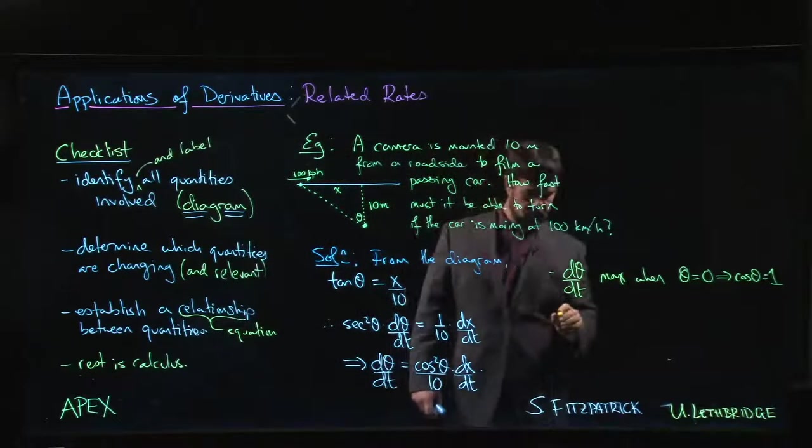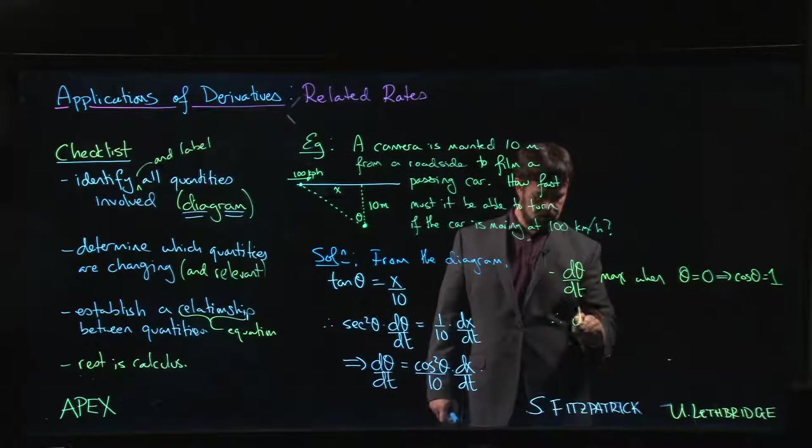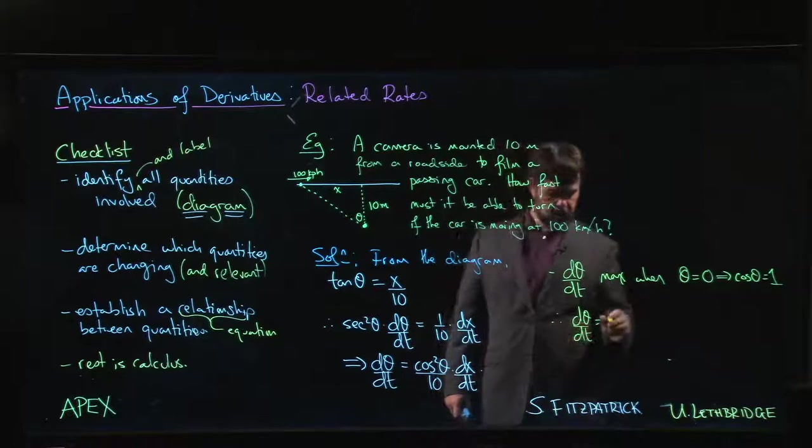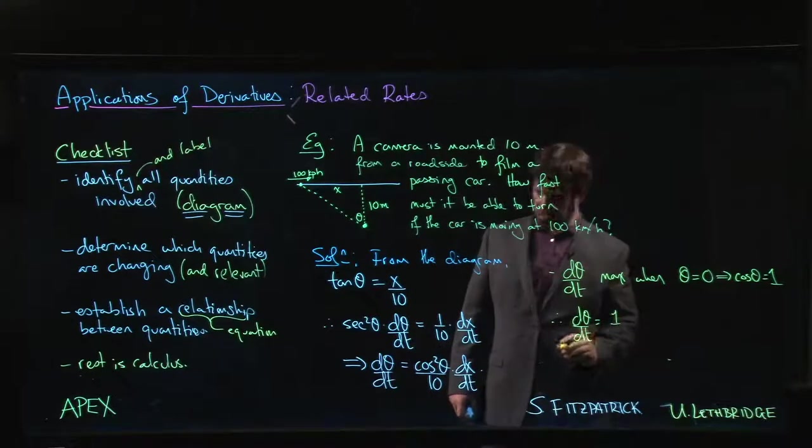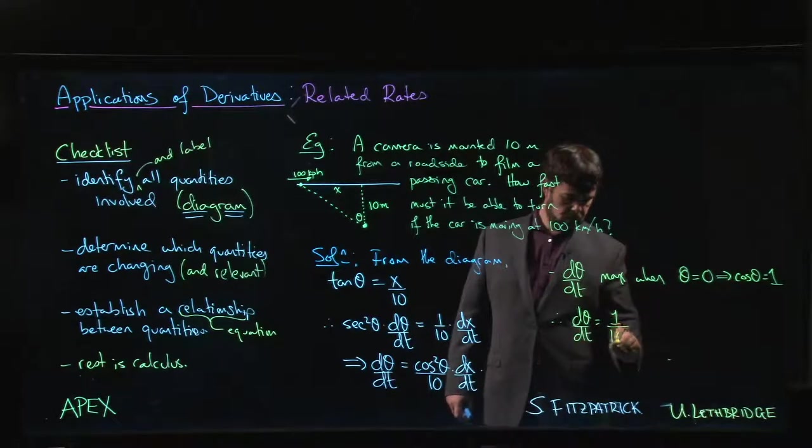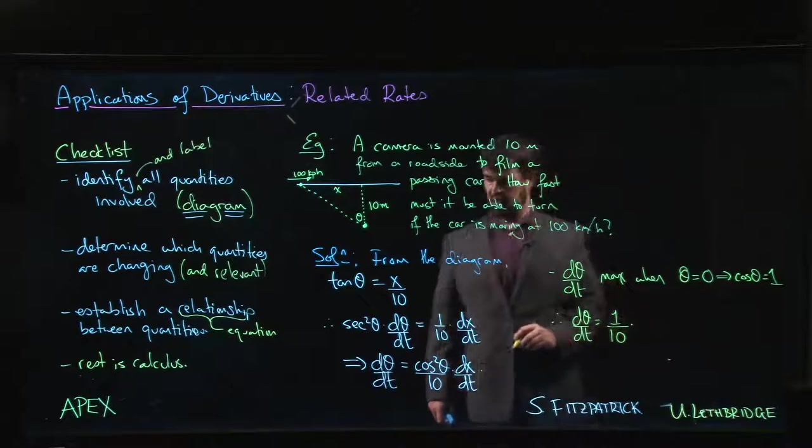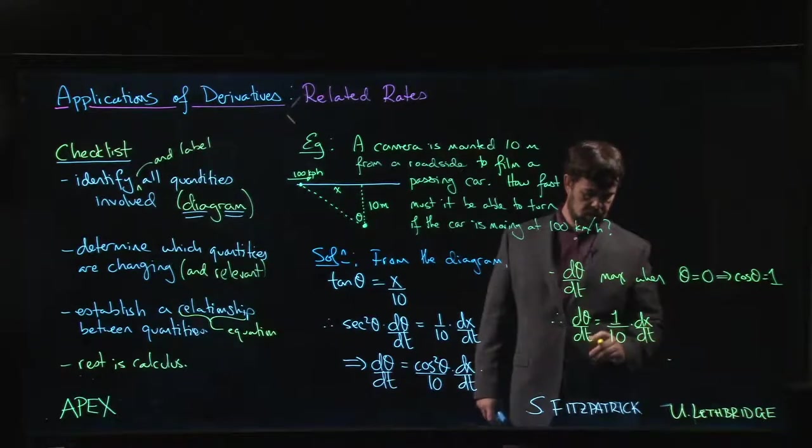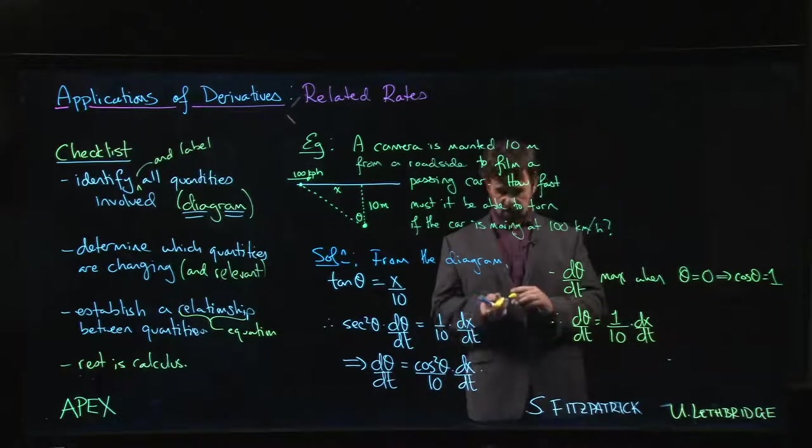So that means that dθ/dt should be simply 1 over 10 times dx/dt. But now we've got to be a little bit careful here.